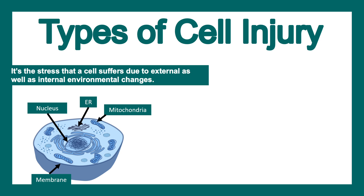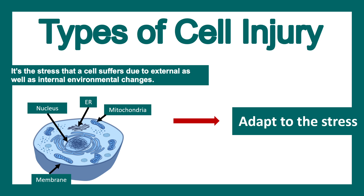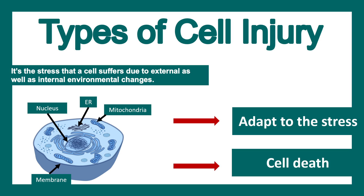There could be two consequences of injury: one, the cell tries to adapt to the stress and regain its own physiology or function; another, the more extreme outcome, is cell death — a non-functional cell would eventually die.